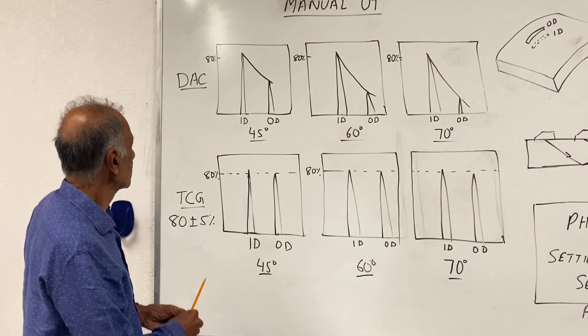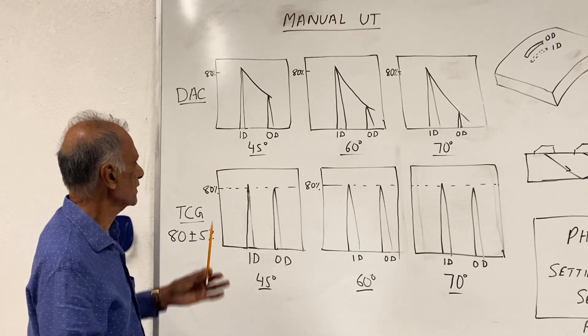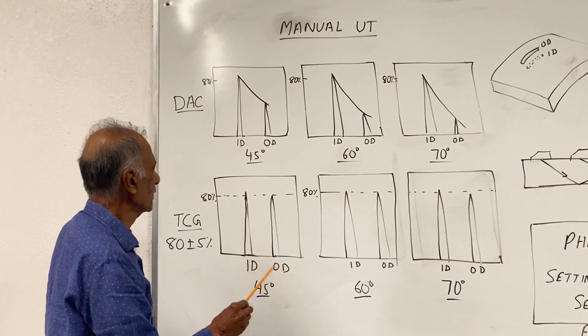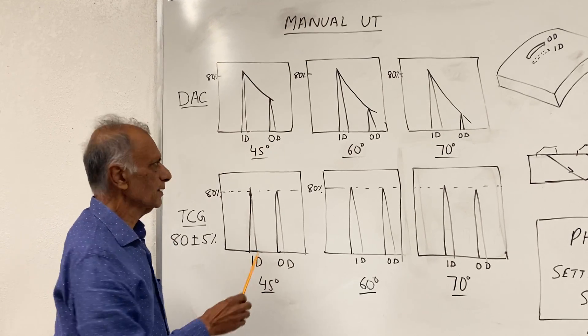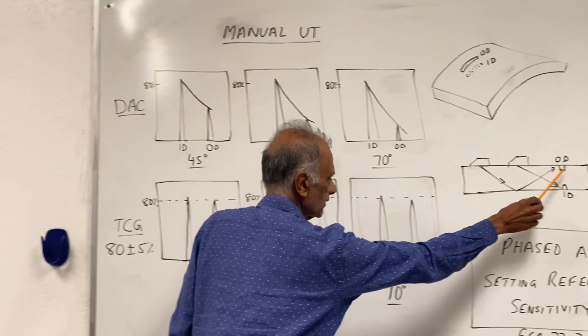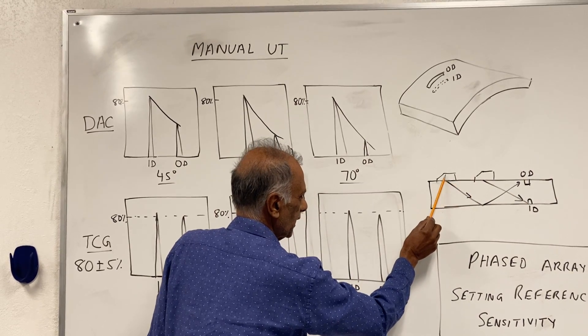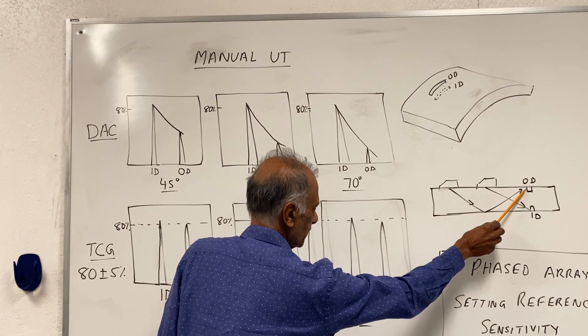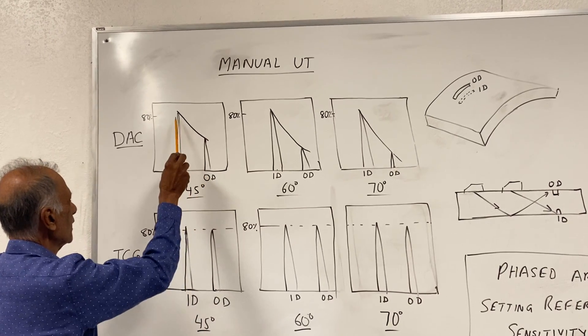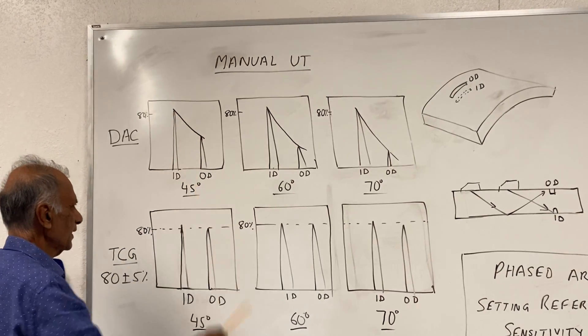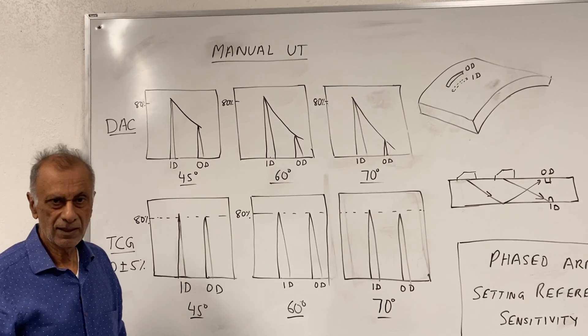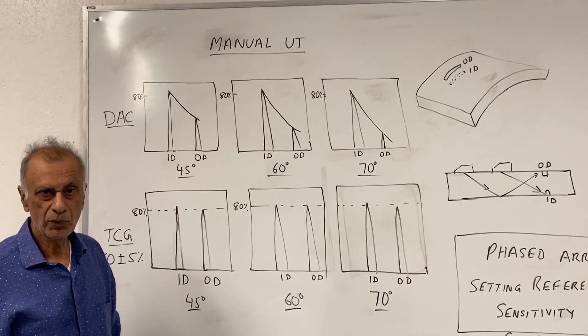So here we have 45 degrees. We get the signal from the ID notch, set it up to 80% AD plus minus 5, and then we get the signal from the OD notch. The ID is straight here and OD is going like this, getting reflected back from the OD notch. We get the signal here and connect the two points, and that becomes our DAC curve. You can make a three-point DAC, but I'm just giving you an example with a two-point DAC here.